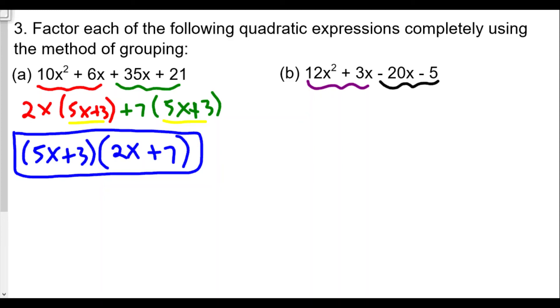So the GCF for 12x² + 3x is to be 3x, and the remaining factor is going to be (4x + 1).